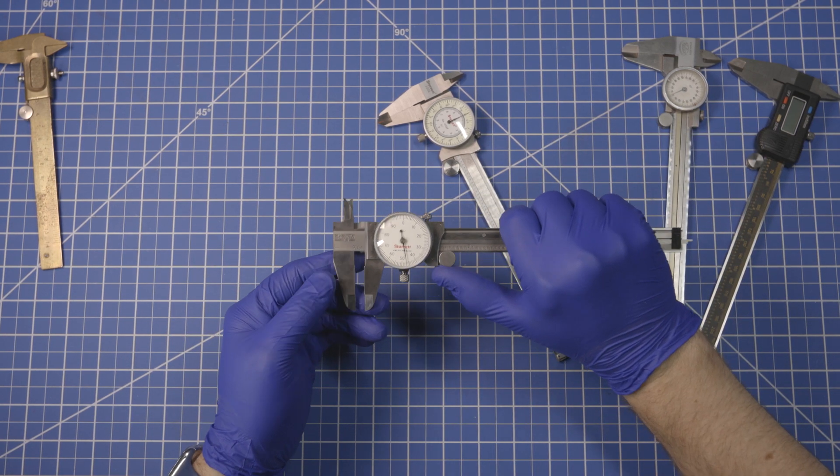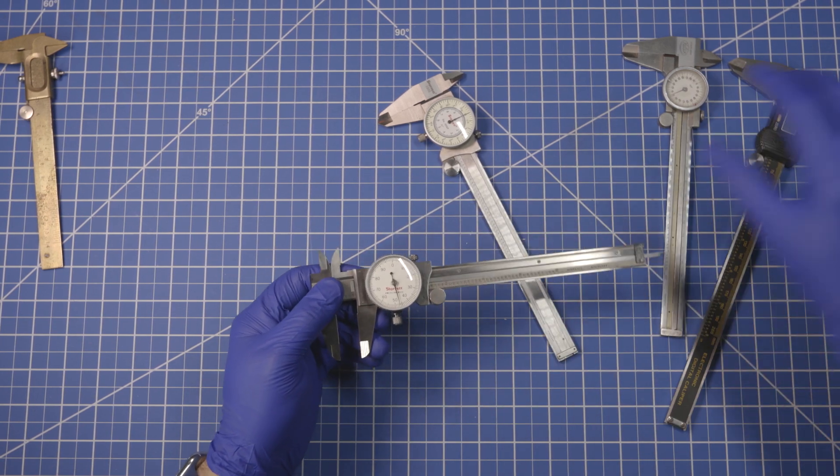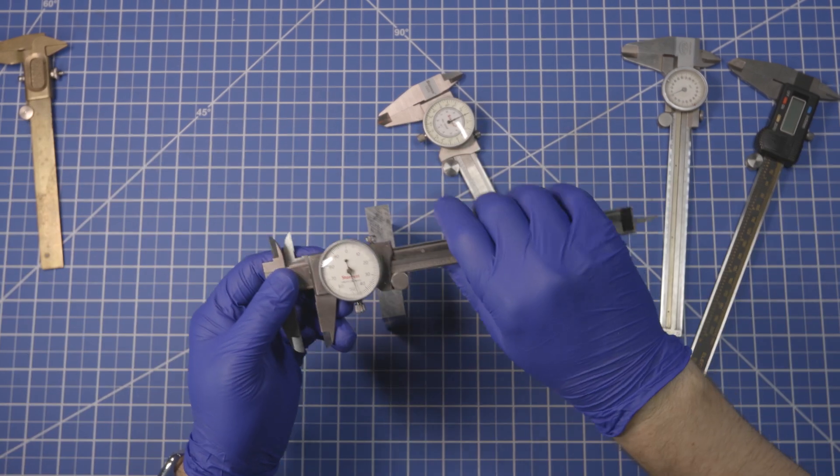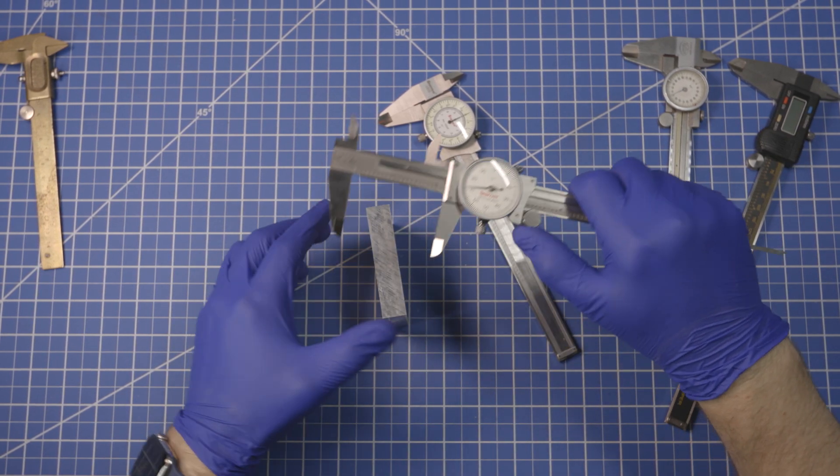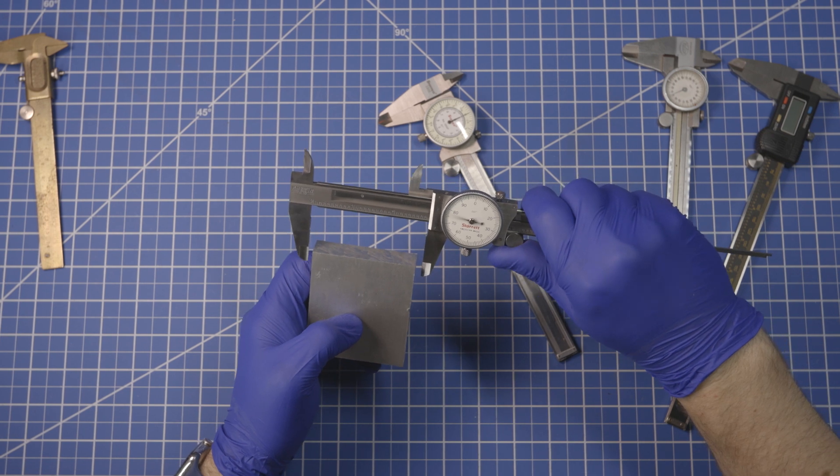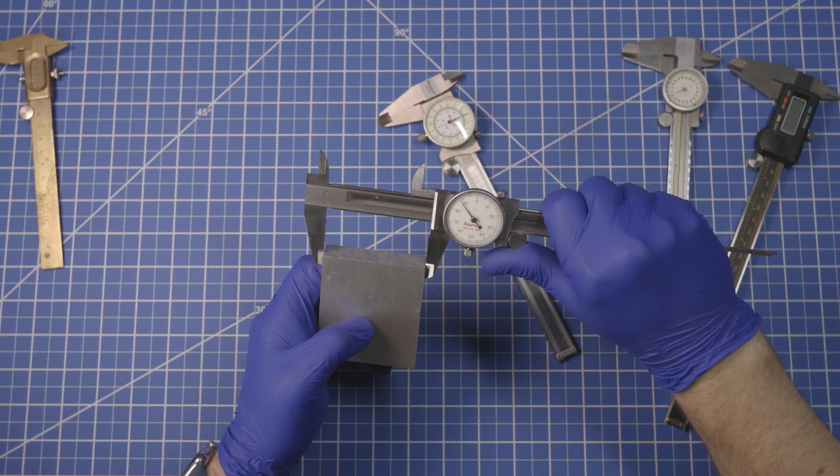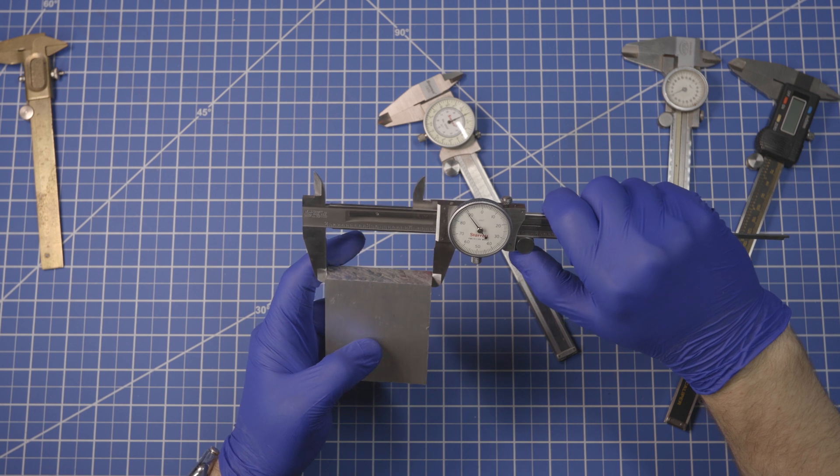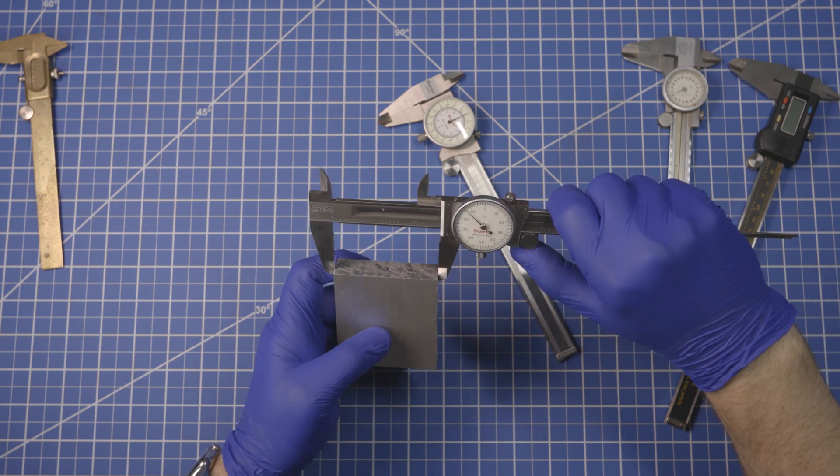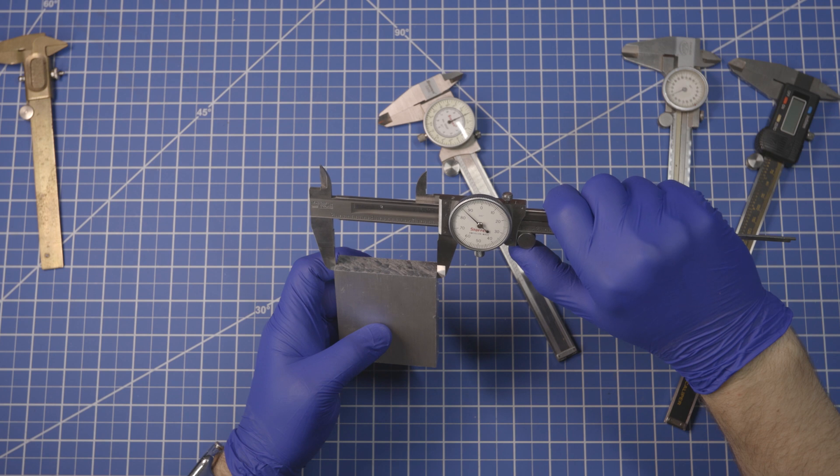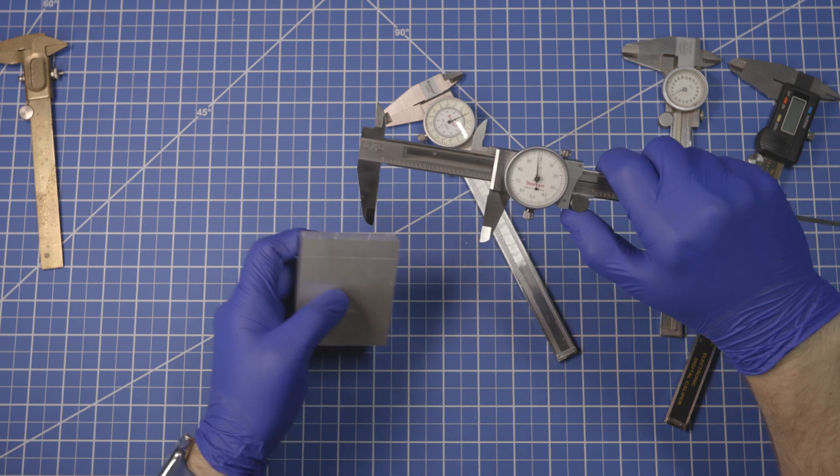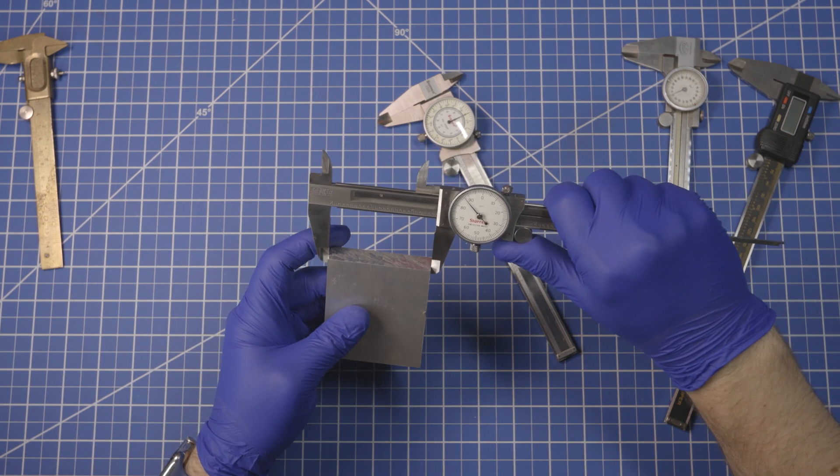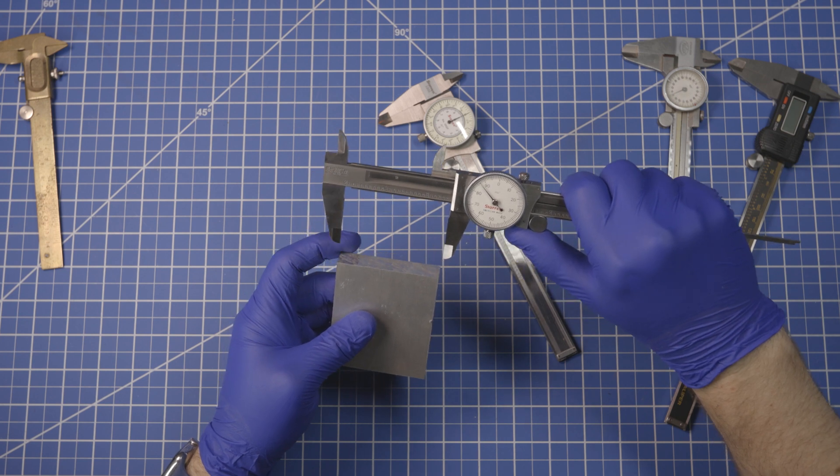First is using these outside jaws. Loosen that up a little bit, spread these guys out, and then place the jaws on what you're measuring. So for example, and you don't need to put a bunch of pressure or anything like that. This is about 2.587 inches. And then as you can see, it bumps pretty easily because it's delicate.